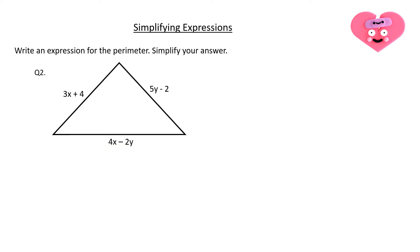Next we have a triangle and we have to write the expression for the perimeter. Similarly I will add all the side lengths, so I am writing here: 3x plus 4 plus 5y take away 2 plus 4x take away 2y.